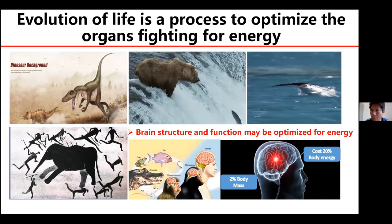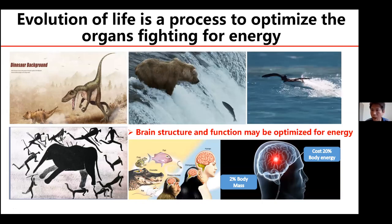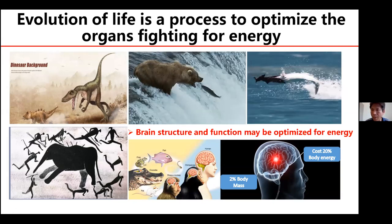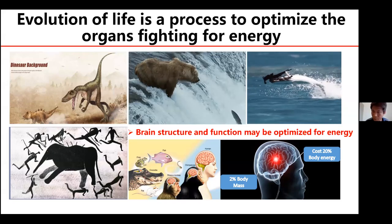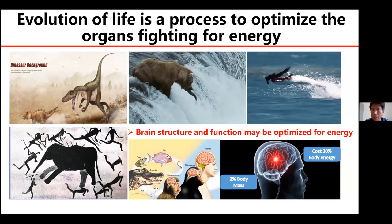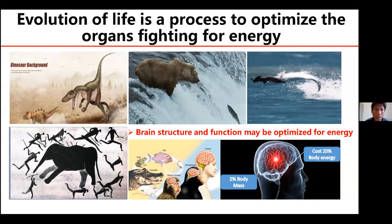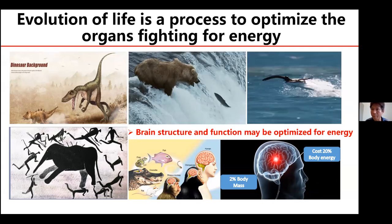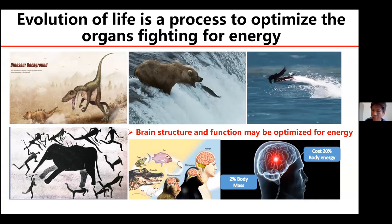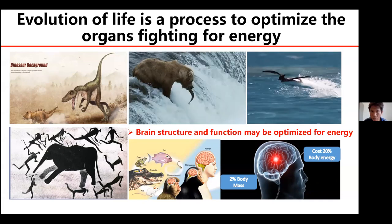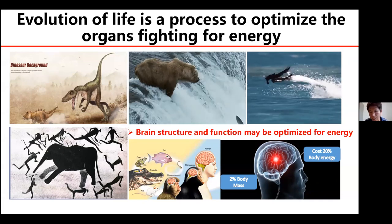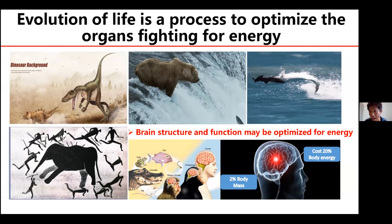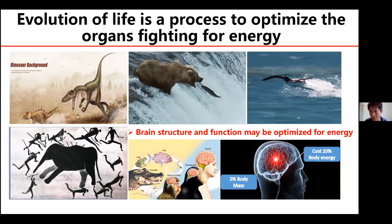When you look at these pictures, you can see that animals are fighting for food. During evolution, animals become better and better at acquiring food. During this process, both our brain and our body became optimized. Regarding our brain, we want to ask this question: are our brain structure and functions optimized for energy utilization?